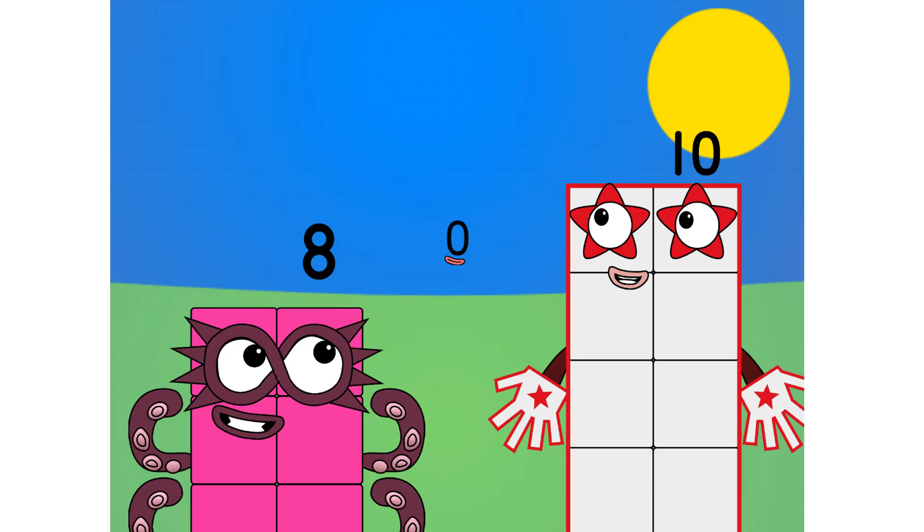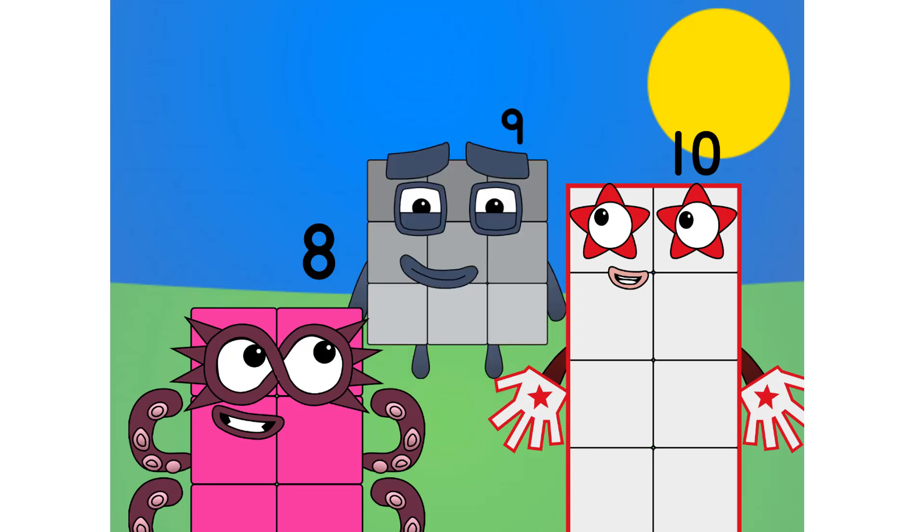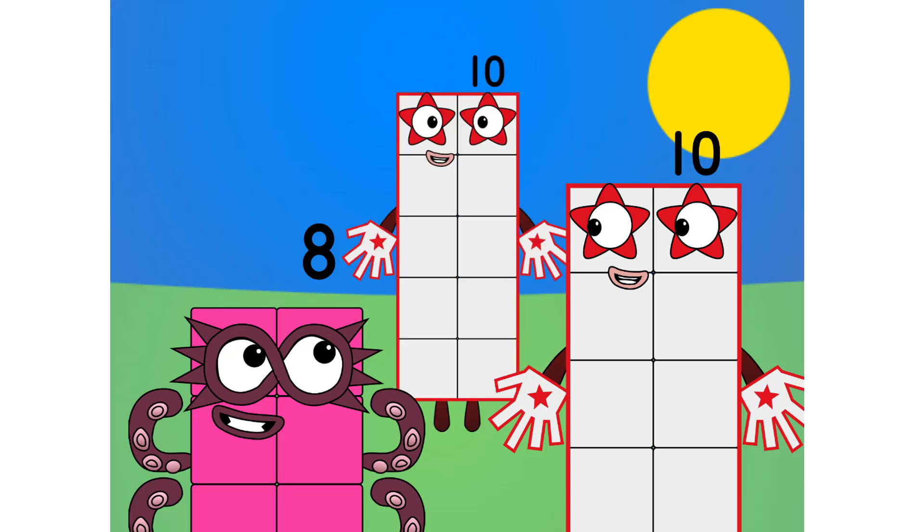Do you know why we count up to ten? No. Well, the main reason why we count to ten is because humans have ten fingers. Five on each of their two hands. One, two, three, four, five, six, seven, eight, nine, ten. See? Ten numbers, ten fingers.